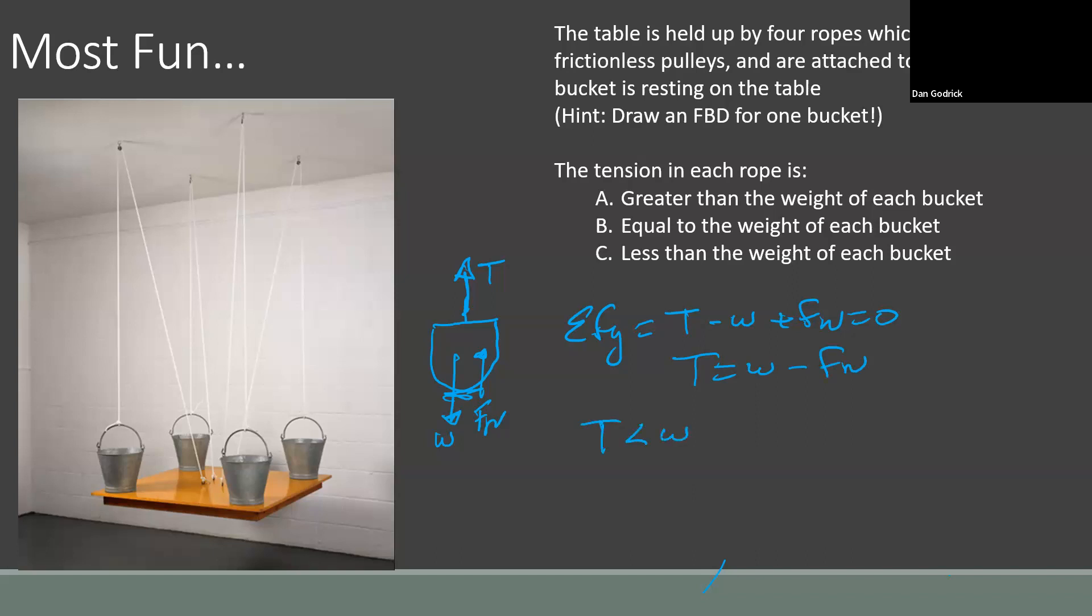Sum of the forces in the Y equals tension minus W plus the normal force. Do some algebra. Tension equals weight minus the normal force. So tension is less than the weight. How do we know that? Well, plug in a number. So let's just say weight is 10. Normal force is 2. Tension is going to be 8 if the weight is 2. So we know tension is less than W. So the answer is C. The tension is less than the weight.